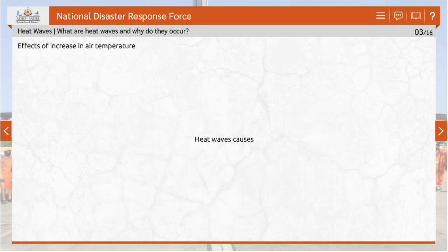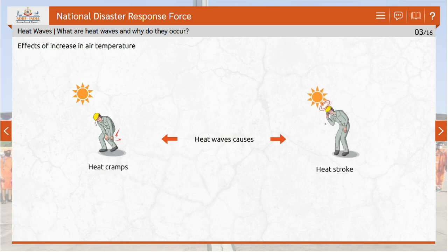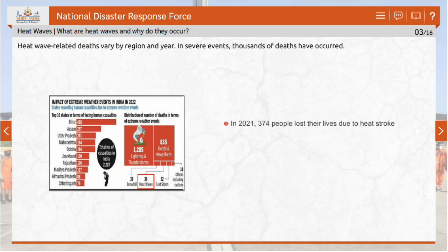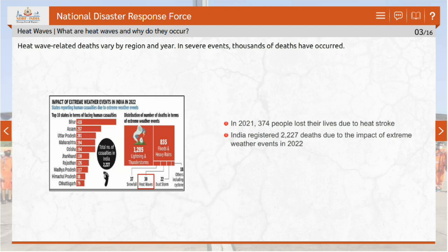Heat waves can be dangerous, causing illnesses such as heat cramps and heat stroke which may even lead to death. Heat wave-related deaths vary by region and year. In severe events, thousands of deaths have occurred. In 2021, 374 people lost their lives due to heat stroke. According to the Climate of India during 2022 report released by the India Meteorological Department, India registered 2,227 deaths due to the impact of extreme weather events in 2022, which was the fifth warmest year on record in the country since 1901.